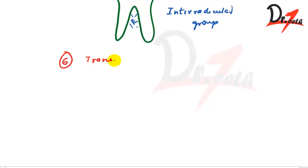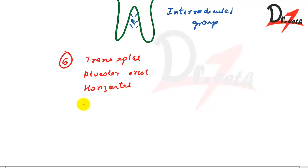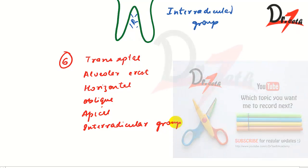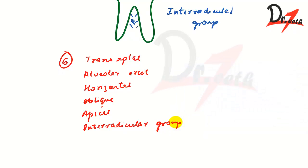In total, we have six principal fibers: trans-septal, alveolar crest, horizontal, oblique, apical, and inter-radicular. Please don't forget to comment and give a thumbs up. You can join on Facebook to stay updated. Thanks for watching.